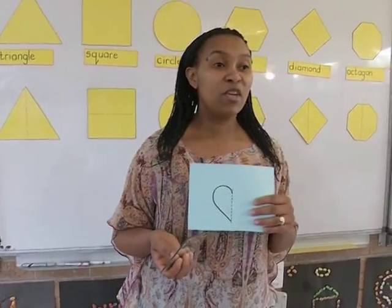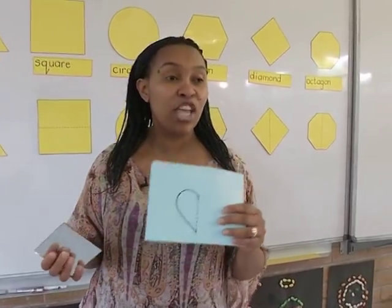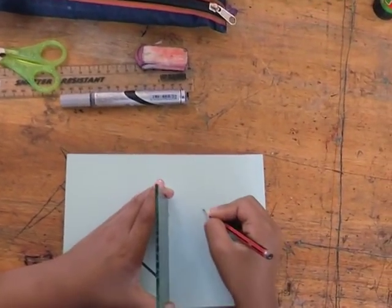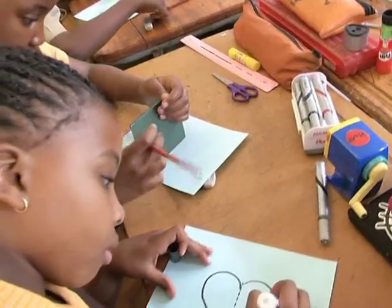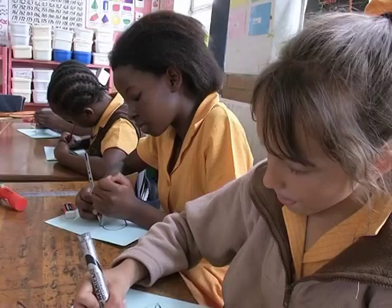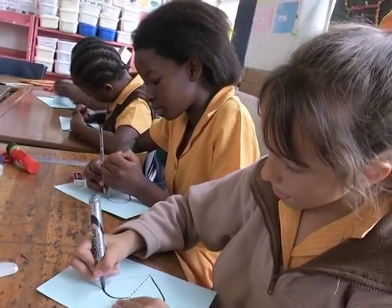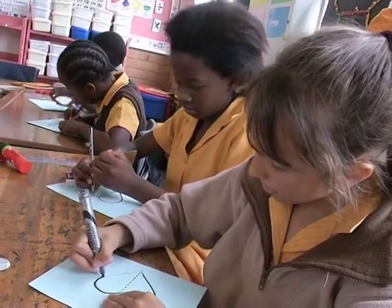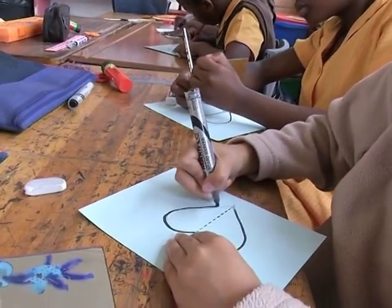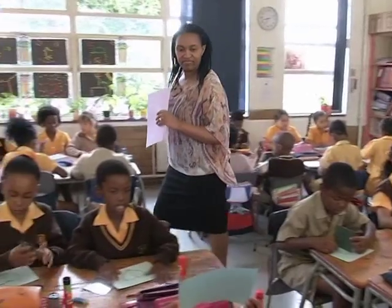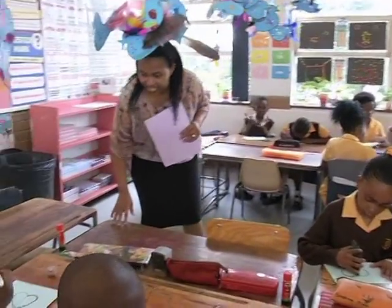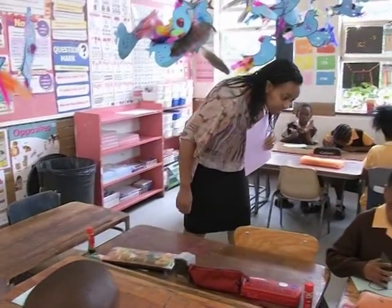I want you to take your pencils and complete your shape by drawing its mirror image as you see it in your mirror. Once you're happy with your half that you've drawn, you can take your black marker and go over it. It is important to walk around and check that everybody understands the concept.